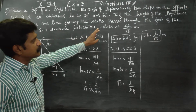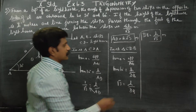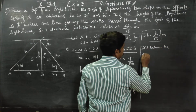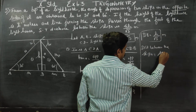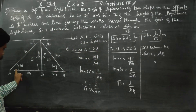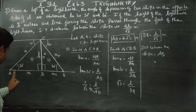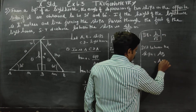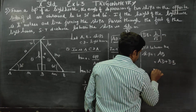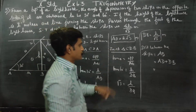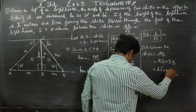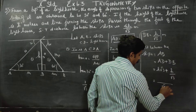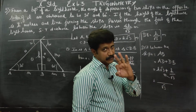Therefore DB = H / √3. The distance between the two ships is AB = AD + DB. AD is already found as H√3, and DB = H / √3. Taking LCM of √3: root 3 × root 3 = 3.